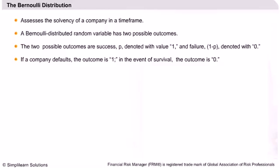When the solvency of a company is assessed, the outcome will either be successful, which is denoted with a value of 1, or failure with a value of 0. To make it simpler, in the case of the Bernoulli Distribution, the event that is taken into consideration to evaluate the probable outcome will always have two possibilities.